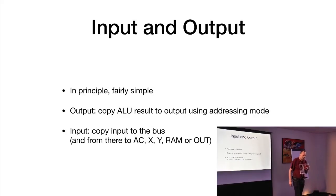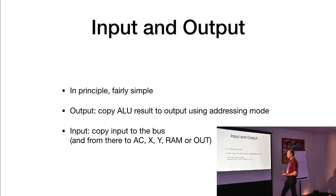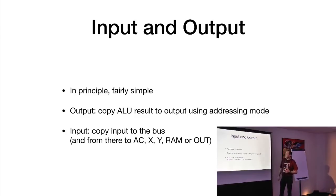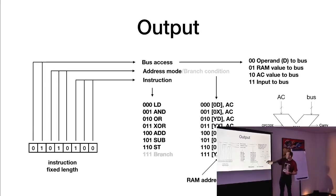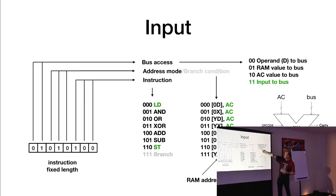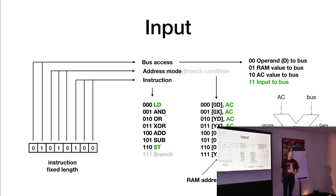Next, we needed buttons and the LED matrix for input and output. Input and output are not that complicated. For output, the ALU result can be placed into the output buffer using addressing mode. For input, bus access mode 11 puts the input onto the bus, and from there we can store it in the accumulator, X, Y, or directly to output. The addressing mode bits decide where the bus value goes.